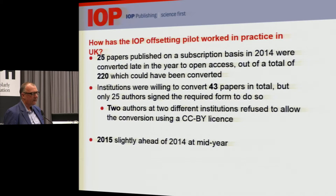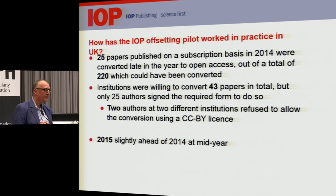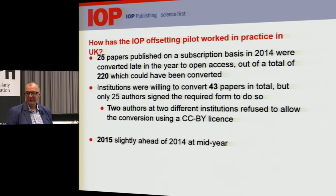Because the pilot got off the ground only around the middle of last year, we offered all participating universities the chance to convert subscription-published articles to open access retrospectively. They could have converted 220; the institutions were willing to convert 43, but only 25 authors could be bothered to sign the copyright form changing the licence to CC BY. Only two refused on the basis that it was CC BY — we have not found much resistance generally in the physics community to the use of CC BY.